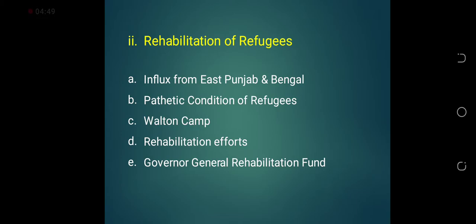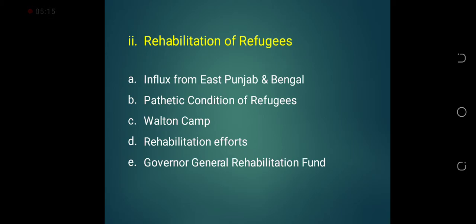The major problem Pakistan faced right after independence was the influx of refugees from East Punjab and Bengal. In East Punjab, the areas unjustly handed over to India were Muslim majority areas. The Muslims living there were content that, according to the third June plan, they were going to become part of Pakistan, so they did not bother about migration. But three days after the partition, on the 17th of August 1947, when Lord Mountbatten announced the partition plan on radio, the people of these areas were shocked to hear that instead of becoming part of Pakistan, they had become part of India.